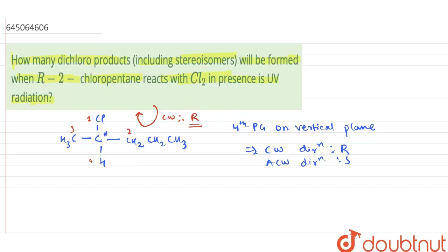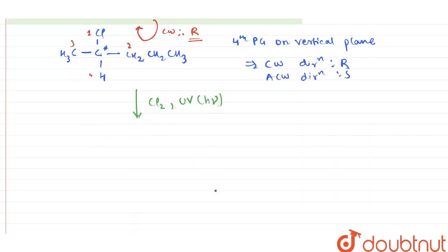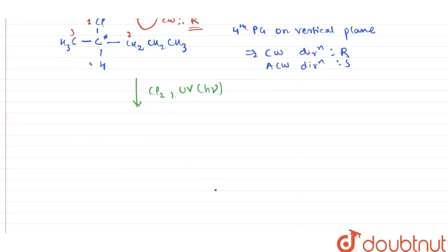Now, when this molecule is reacted with Chlorine in presence of UV radiation or you can say hν, what are the different dichloro products obtained in which we have to include the stereoisomers also?